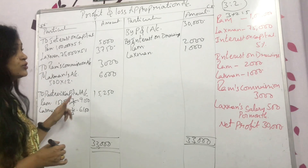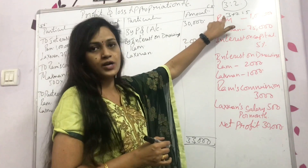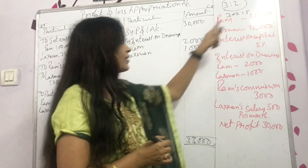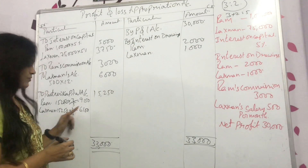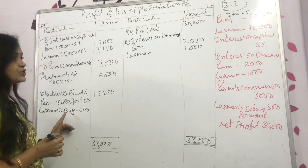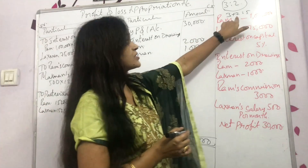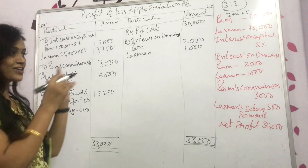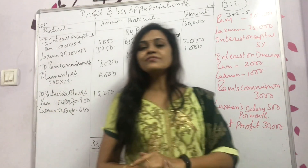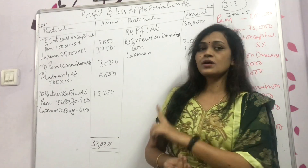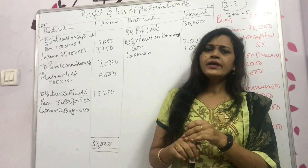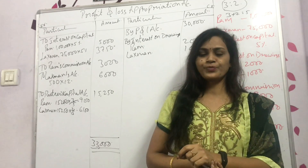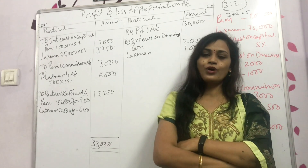Ram's share: 15,250 × 3/5 = 9,150. Lakshman's share: 15,250 × 2/5 = 6,100. This is how we solve the profit and loss appropriation account. Whatever type of question comes, you won't get more adjustments than this.